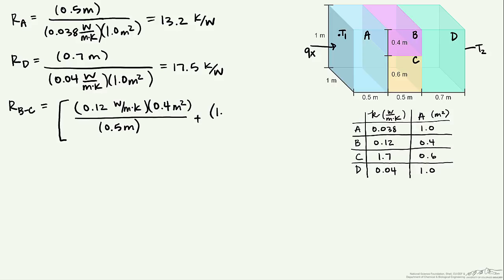And so we do the same thing for our C. And so when we calculate this, what we call equivalent circuit, we end up with 0.47 kelvin per watt.